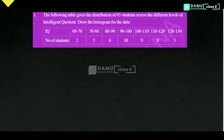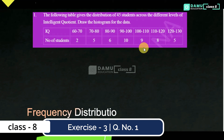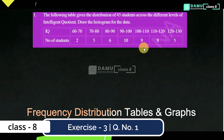Hello, thanks for watching our videos. If not yet subscribed, please subscribe and click the bell icon. In this module we are going to discuss the following: the table gives the distribution of 45 students across different levels of intelligent quotient (IQ). Draw the histogram for the data. So histogram means we are going to construct rectangular bar graphs.